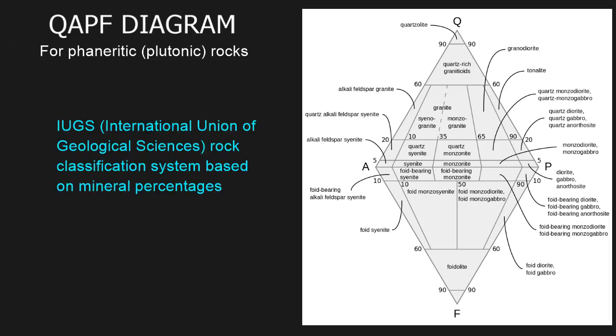So what is a QAPF diagram? A QAPF diagram is a method to classify rocks based on their mineral percentages. It gives a naming convention to igneous rocks based on the percentage of minerals in that rock, and it's basically the standard to classify igneous rocks.